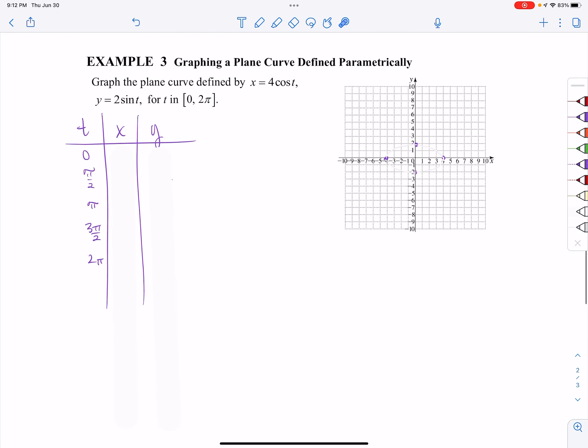Example number 3. Same concept here. Now we have our x is equal to 4 cosine t, our y is equal to 2 sine t. And my restricted values are from 0 to 2 pi. You notice I have 0, pi over 2, pi, 3 pi over 2, and 2 pi. I just used my quadrant values here. And I'm going to plug each of those t values in.